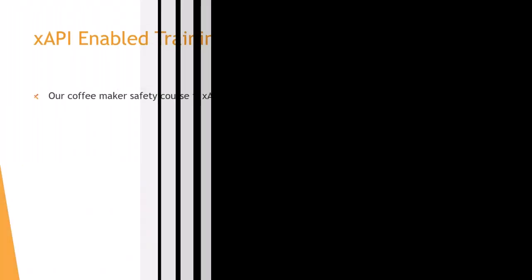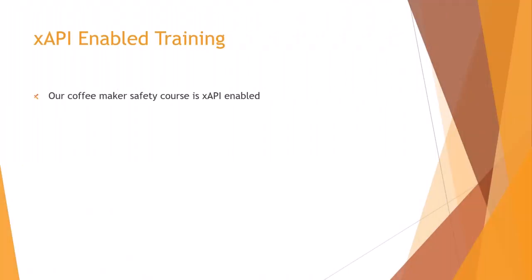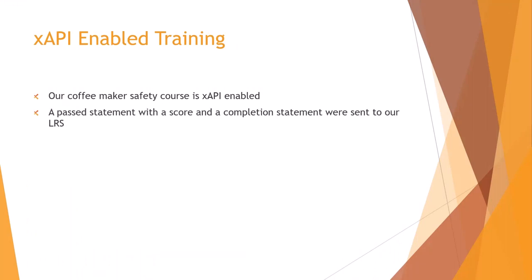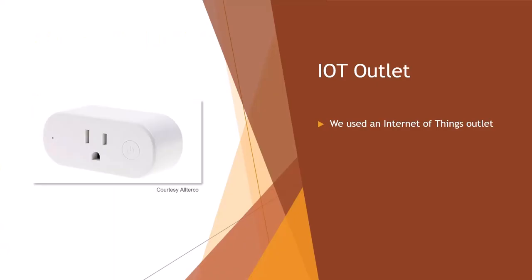So how did we do that? Let's take a look. First, we used an XAPI-enabled course, which sent a passed and completed statement to our learning record store. We set up an Internet of Things switch or outlet on our coffee pot.